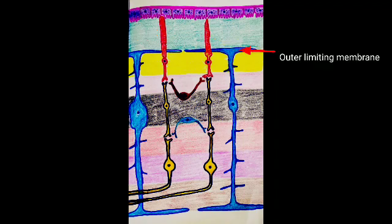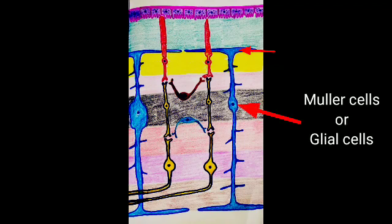Next layer is outer limiting membrane. This layer is located between second and third layer. Here we can see zonula adherens of the glial cells. These glial cells are also called muller cells. These muller cells are forming the zonula adherens with the photoreceptor cells. Muller cells are large supporting cells of the retina. They have long slender bodies that are radially oriented in the retina.